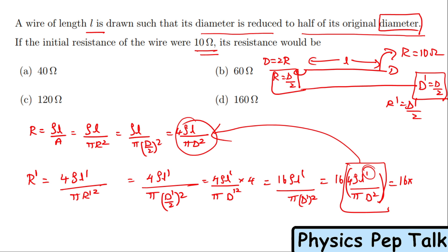They first gave us the value of R as 10 ohms. So R' will be equal to 16 times R, which is 16 × 10 = 160 ohms. This is the right answer for this problem. Option D is the right answer.